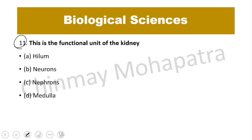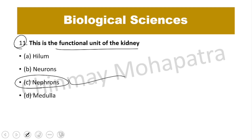Question number 11: What is the functional unit of the kidney? The answer is the nephron. The nephron is the functional unit of the excretory system.